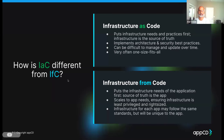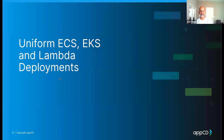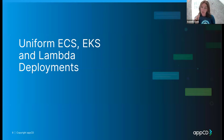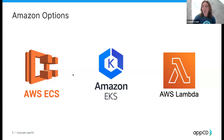Moving on, we're going to dig into ECS, EKS, and Lambda. There are three main compute options we're going to talk about today. I always have to say those things slowly to make sure I get the initials right. So the three are ECS, EKS, and Lambda.